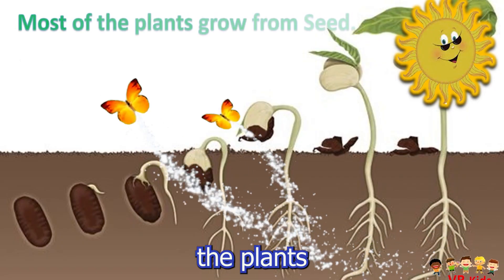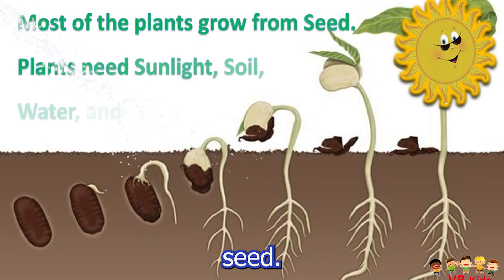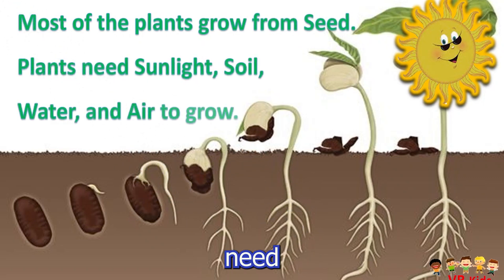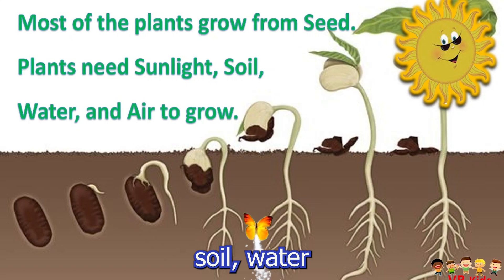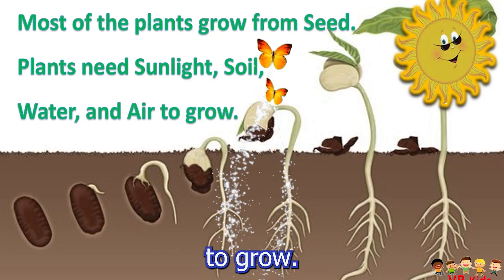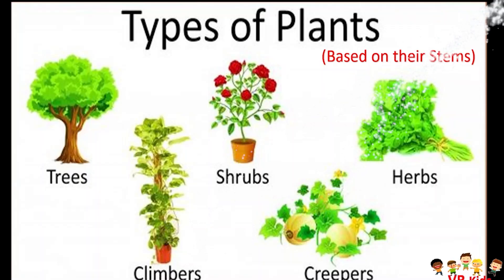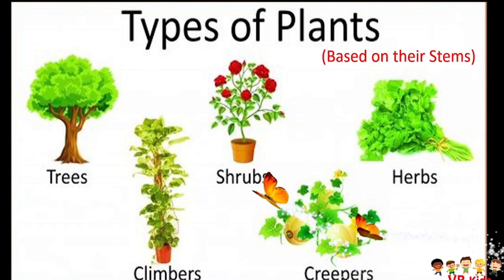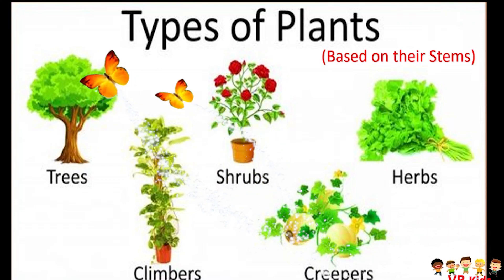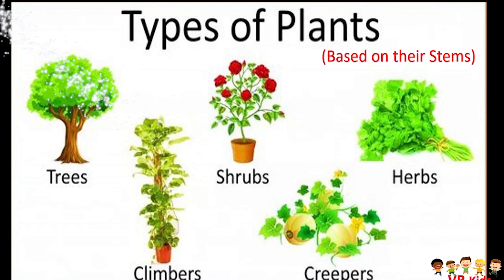Most plants grow from seed. Plants need sunlight, soil, water and air to grow. Let us see plants classified based on their stems: trees, climbers, shrubs, creepers, and herbs.